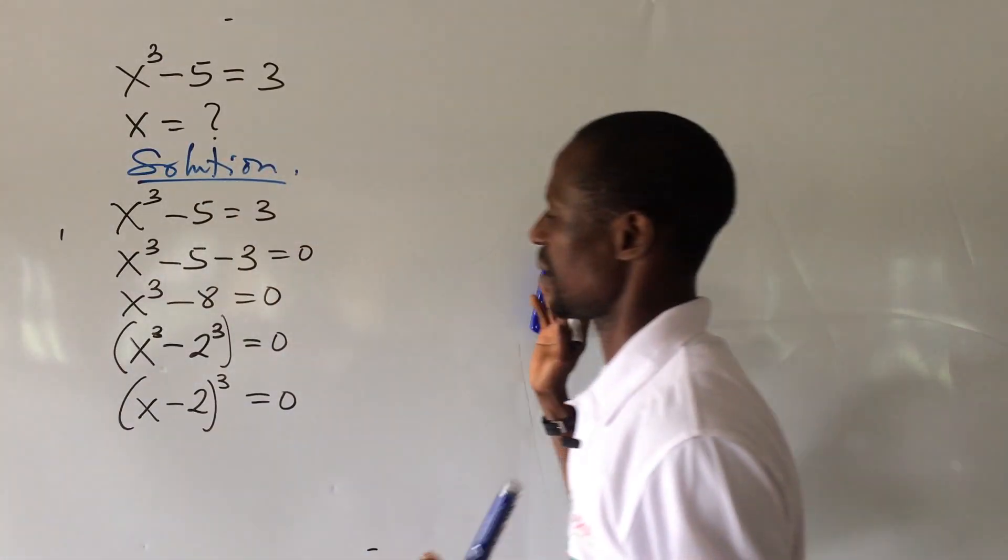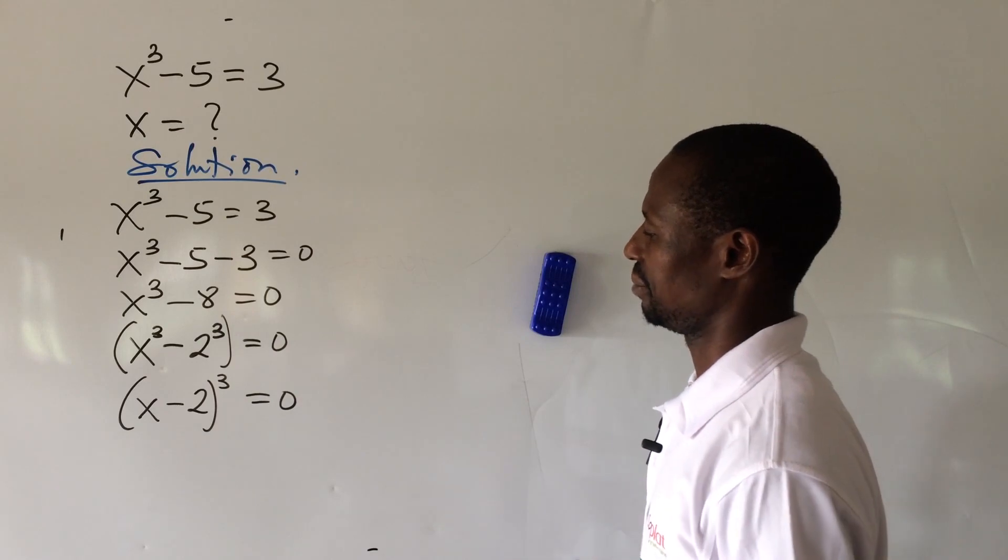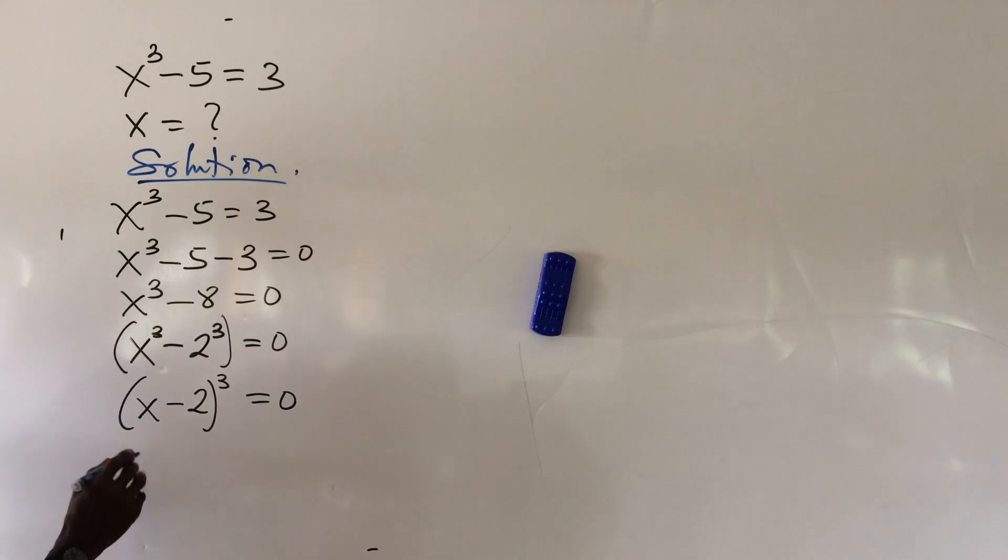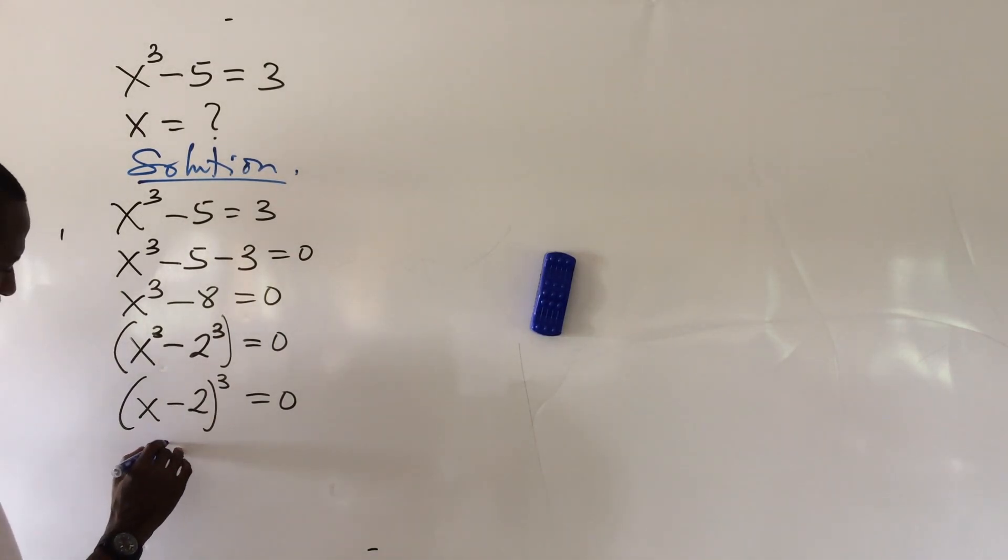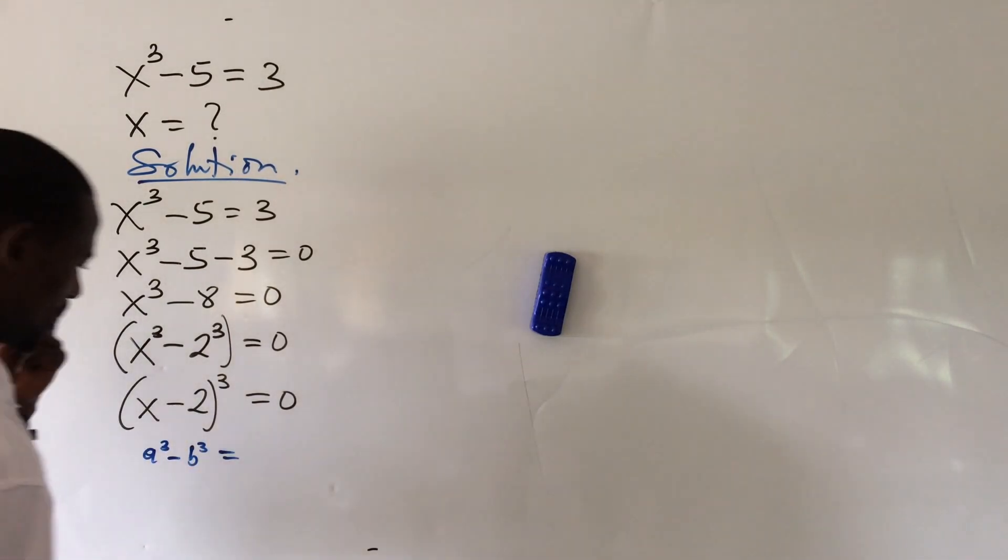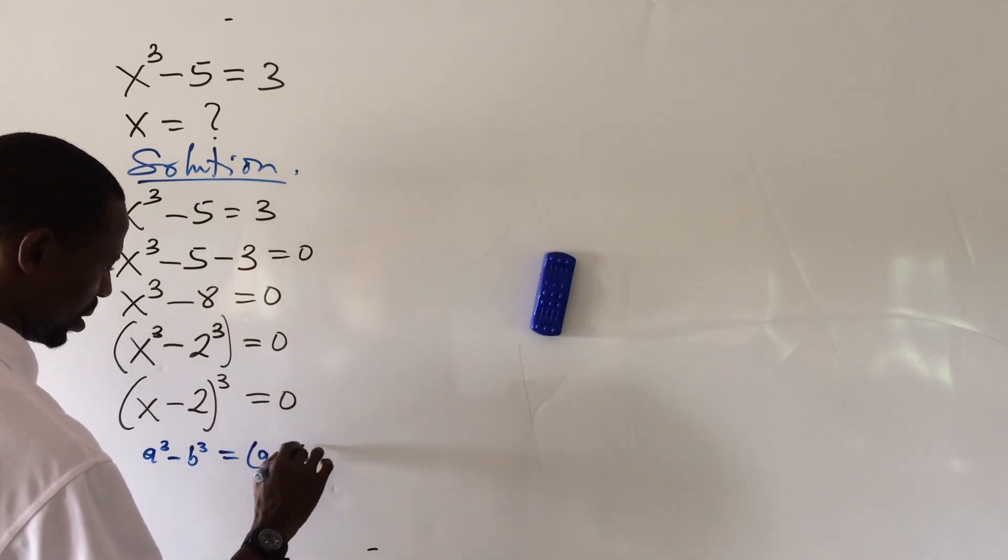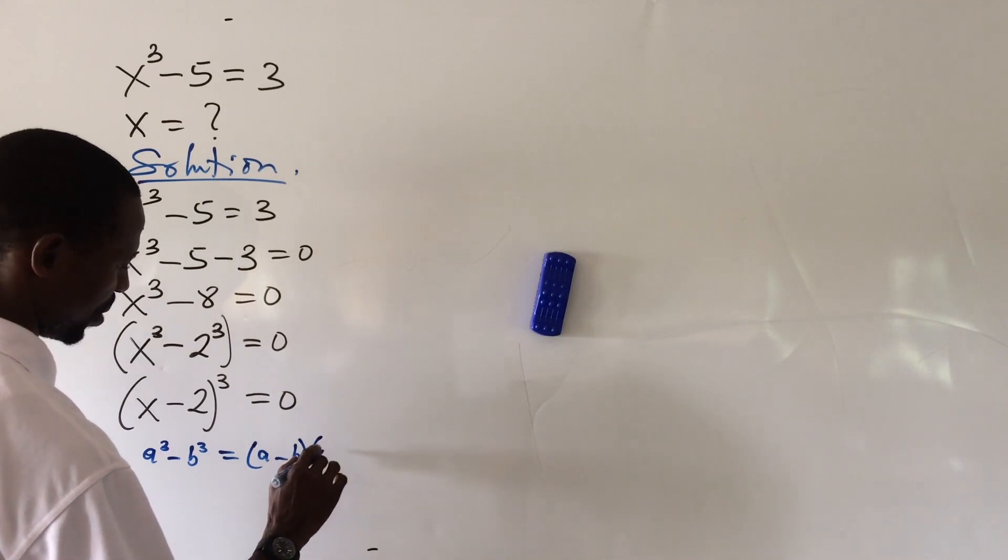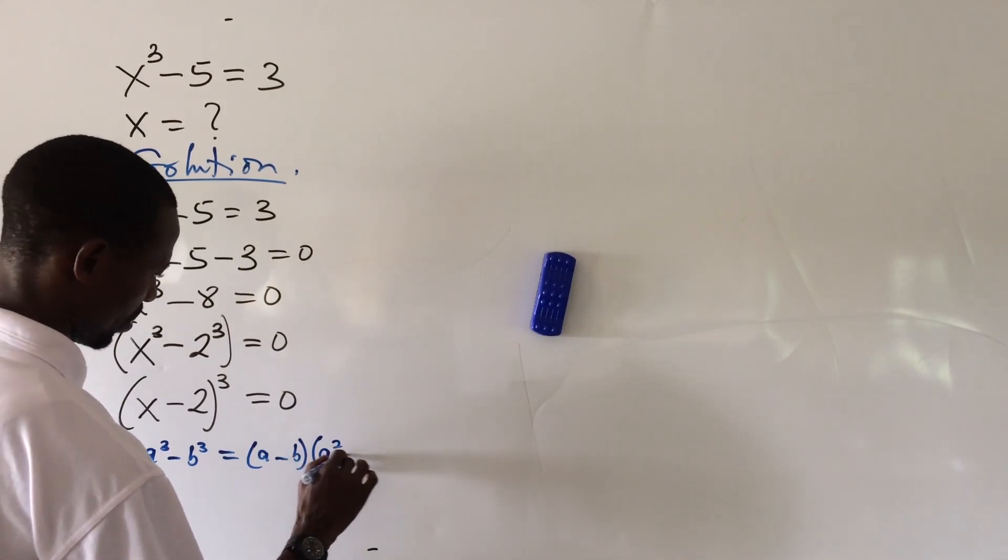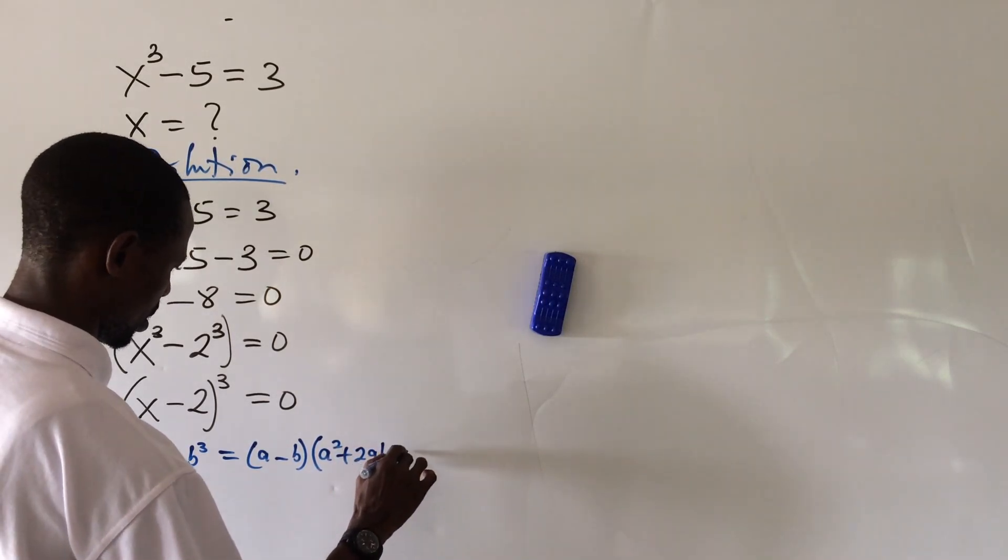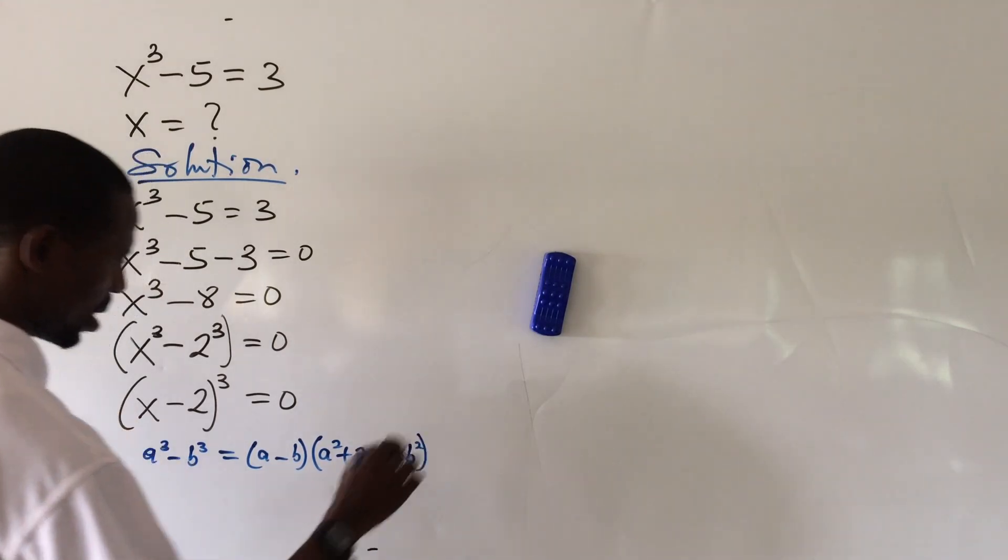Very nice. Now, from here there is a relationship which says that if you have e to the power of 3 minus b to the power of 3, this is same as bracket open a minus b close bracket, bracket open a squared plus 2ab plus b squared.